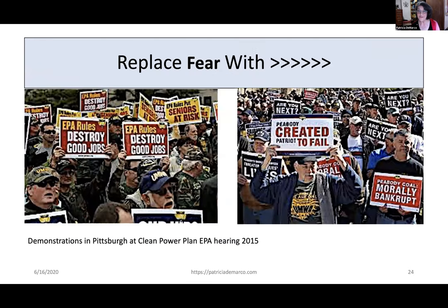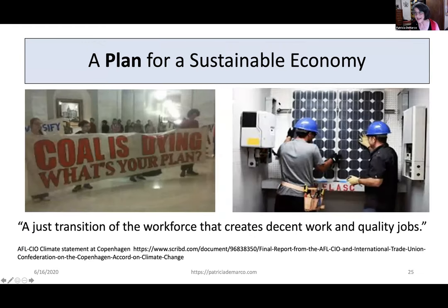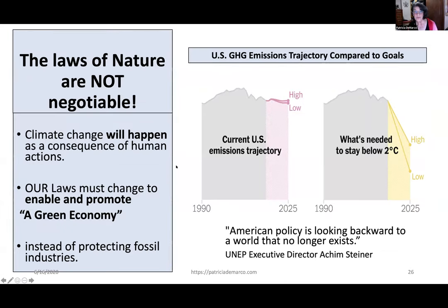We need to think about what we really need in our communities and what we want as a future for our children and ourselves. We have to replace the fear of change that comes when people see their way of life threatened with a plan for a sustainable economy. That plan not only has to have a just transition of the workforce, it has to create decent work and quality jobs. These are available in the green economy — good jobs that pay well and take many of the same skills, applied in ways that do not cause us to destroy our land and our life support. The laws of nature are not negotiable. Climate change will happen as a consequence of human actions, and our laws must change to promote a green economy instead of protecting fossil industries.